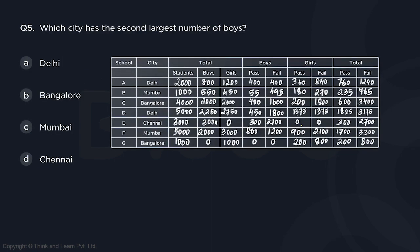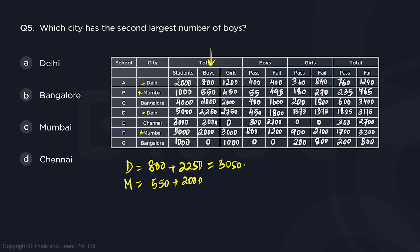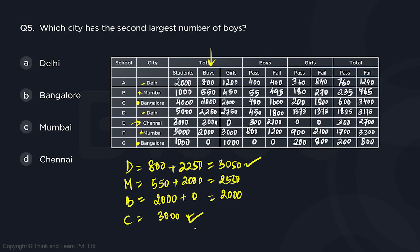Question 5: Which city has the second largest number of boys? Delhi: 800 + 2250 = 3050 boys. Mumbai: 550 + 2000 = 2550 boys. Bangalore: 2000 boys (school G is all girls). Chennai: 3000 boys. Chennai (3000) is the highest and Delhi (3050) is actually the highest — so Chennai at 3000 is second largest. Chennai is the city with the second largest number of boys.